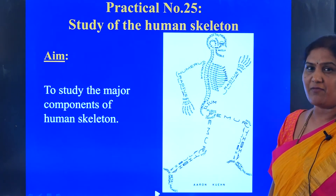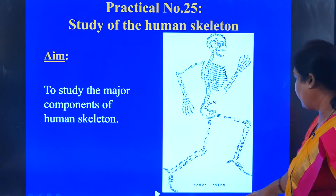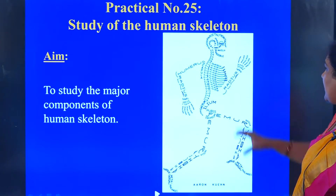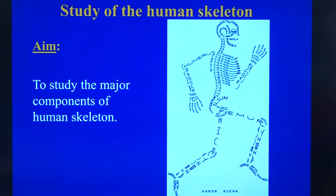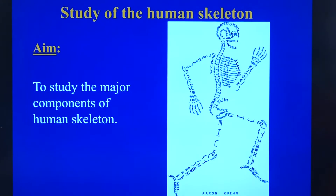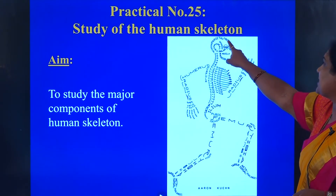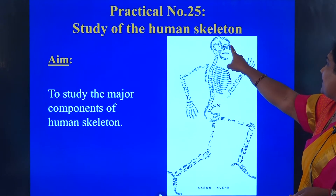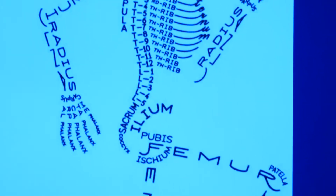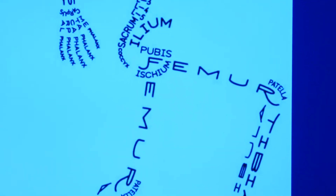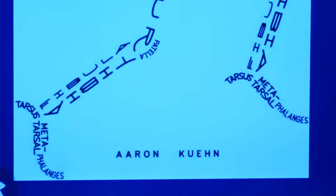The skeleton gives a framework and a shape to the body. This particular picture — credit goes to Arun — depicts every part of the bone, and it has been labeled. It's wonderful for you to remember for your practical classes as well as for your theory. The names have been put here: parietal, frontal, nasal, orbit, humerus, radius, ulna. Just work out looking into the various labelings at the region where the bones are present.